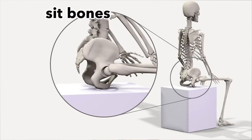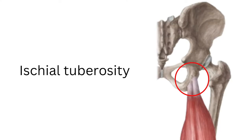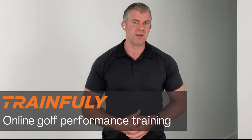Another way we can develop a hamstring tendinopathy is from sitting too much. When we sit, we're sitting on the ischial tuberosity — that's why we call it the sit bone. The hamstring tendons originate from the ischial tuberosity, so when we're sitting, we're compressing the hamstring tendons between the ischial tuberosity and the surface we're sitting on. If we sit a lot, especially on hard surfaces, we can eventually damage the hamstring tendons. So those are some of the ways we can develop a hamstring tendinopathy. But how do we know the pain in our buttock is actually from the hamstring tendon? There are a lot of tissues in that area that can cause pain.